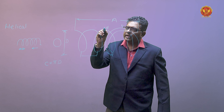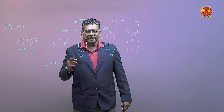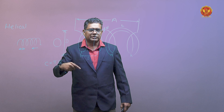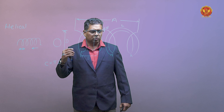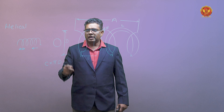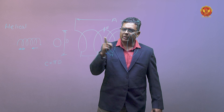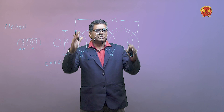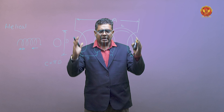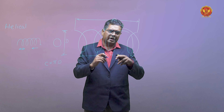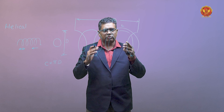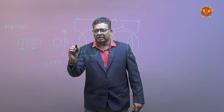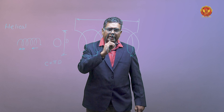और ये जो D दिख रहा है, ये उस wire की thickness है जिसको हमने roll किया है। तो क्या किया — एक wire लिया, उसको एक cylinder पर roll किया। उस cylinder पर roll करने के बाद जितनी पूरी length हुई उसकी, उसको हमने A कहा है। ये एक turn में जो wire consume हुआ है, उसको हमने L कहा है। ये construction हम अभी आगे continue करेंगे next slide में।